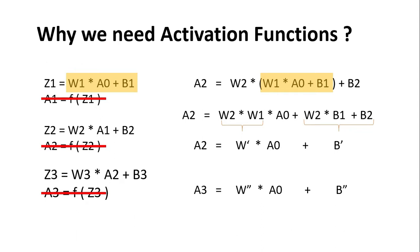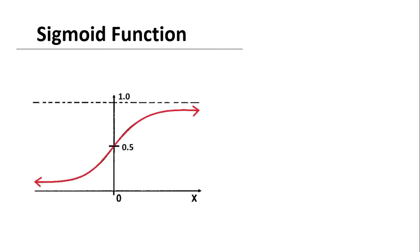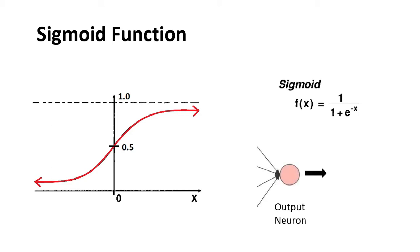Now let's look at the different types of activation functions, starting with the most famous — the sigmoid function. The sigmoid function is an S-shaped curve which takes any value between 0 to 1, and for a given input value of 0 it gives 0.5 as the output. As it only takes values between 0 and 1 it can be interpreted as a probability if used in the output layer. So sigmoid function is most commonly used at the output neuron in binary classification — for example, if the output is greater than 0.5 we classify it as an apple, and if less than 0.5 we classify it as an orange.